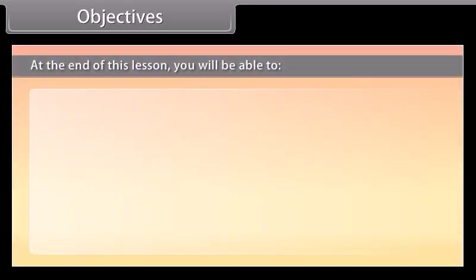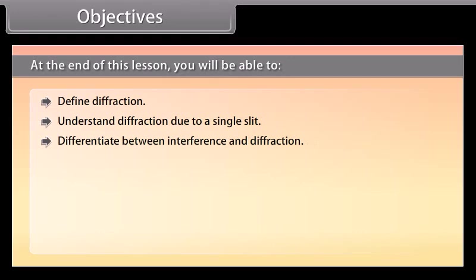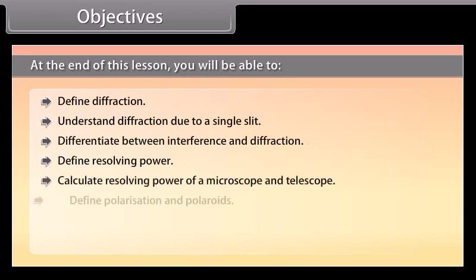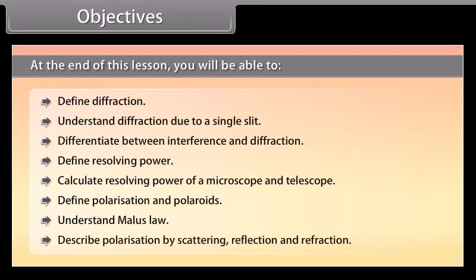At the end of this lesson, you will be able to: define diffraction; understand diffraction due to a single slit; differentiate between interference and diffraction; define resolving power; calculate resolving power of a microscope and telescope; define polarization and polaroids; understand Malus's law; describe polarization by scattering, reflection, and refraction.